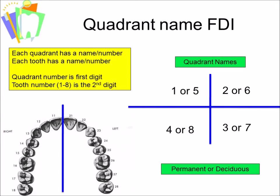The first number is the name of the quadrant. The permanent dentition uses quadrants one, two, three, or four. The deciduous dentition uses quadrants five, six, seven, and eight. We count from upper right to upper left to lower left to lower right. So using the FDI System, an upper right central incisor would be tooth number 11 — quadrant one, tooth one.